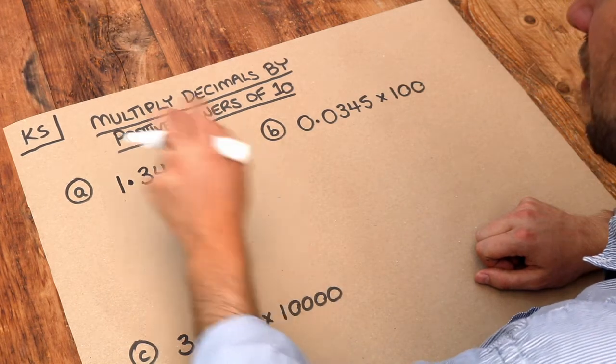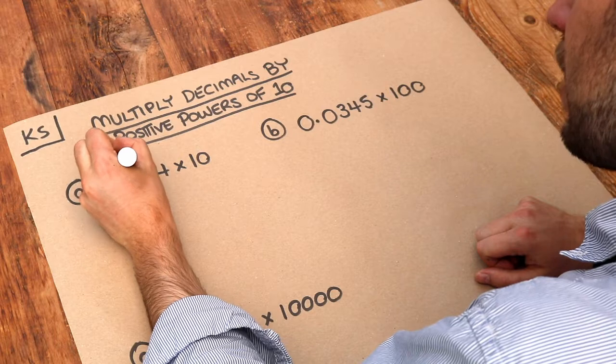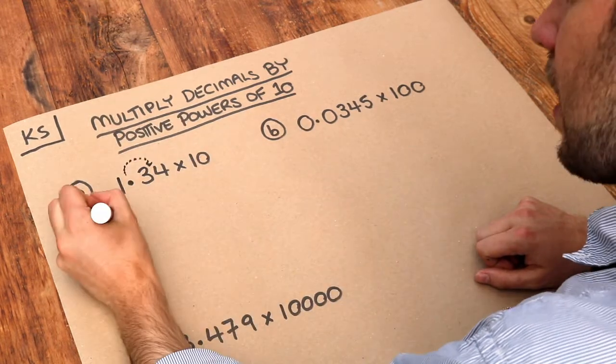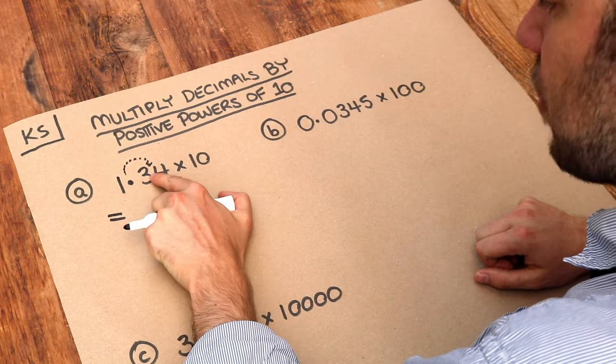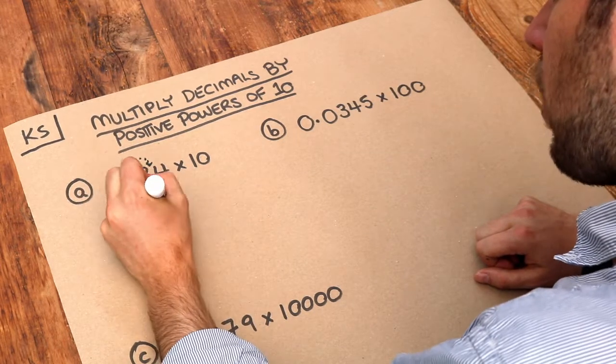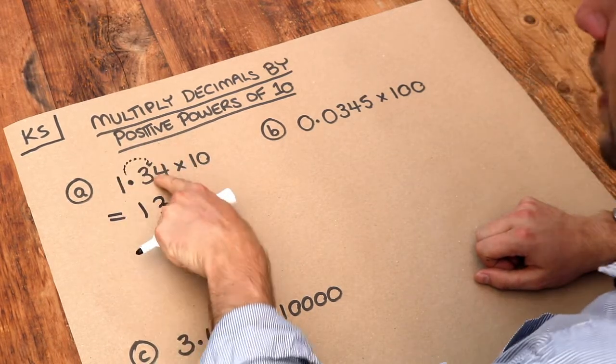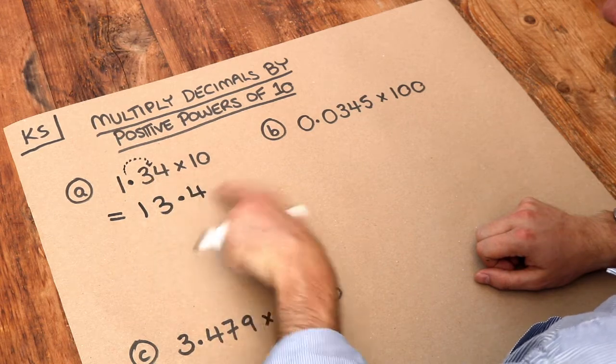So this one, we've got one zero, that means this decimal point is going to move one position to the right. And we can see now the decimal point is between the three and the four, so we've got 13.4, that decimal point is between the three and the four.